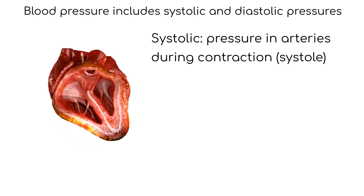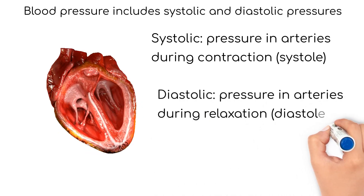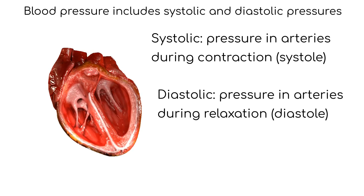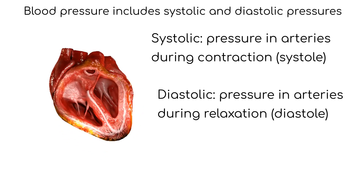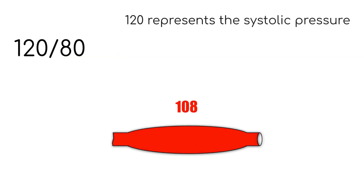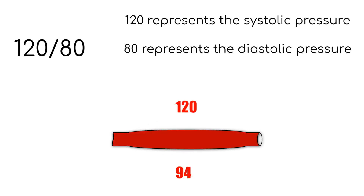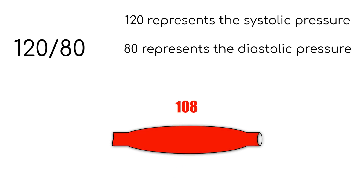The diastolic pressure is the pressure in the arteries during relaxation of the heart, called diastole. Blood pressure is represented by both numbers, with the systolic number on top and the diastolic number on the bottom.